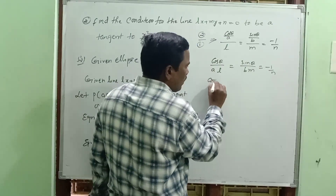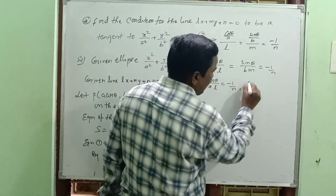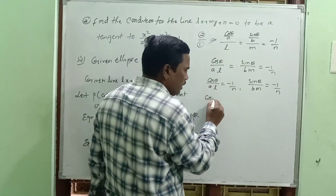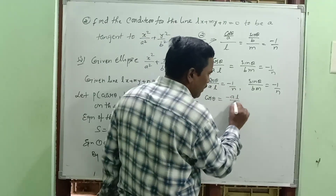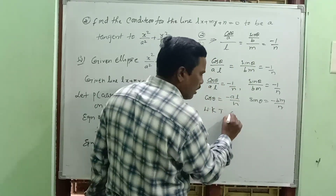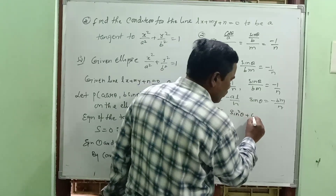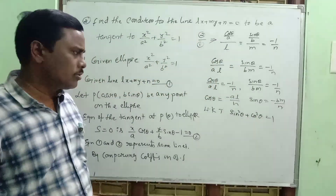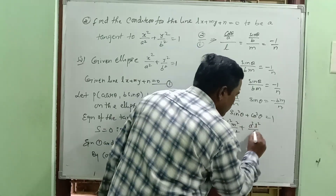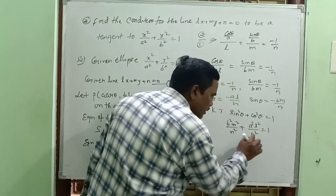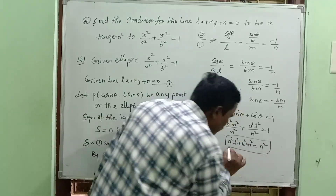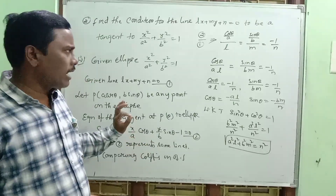From the first to last ratio: cos theta equal to minus al by n, and sin theta equal to minus bm by n. Using the identity cos square theta plus sin square theta equal to 1: a square l square by n square plus b square m square by n square equal to 1, giving the final answer: a square l square plus b square m square equal to n square. This is the condition — a very important and straightforward result.